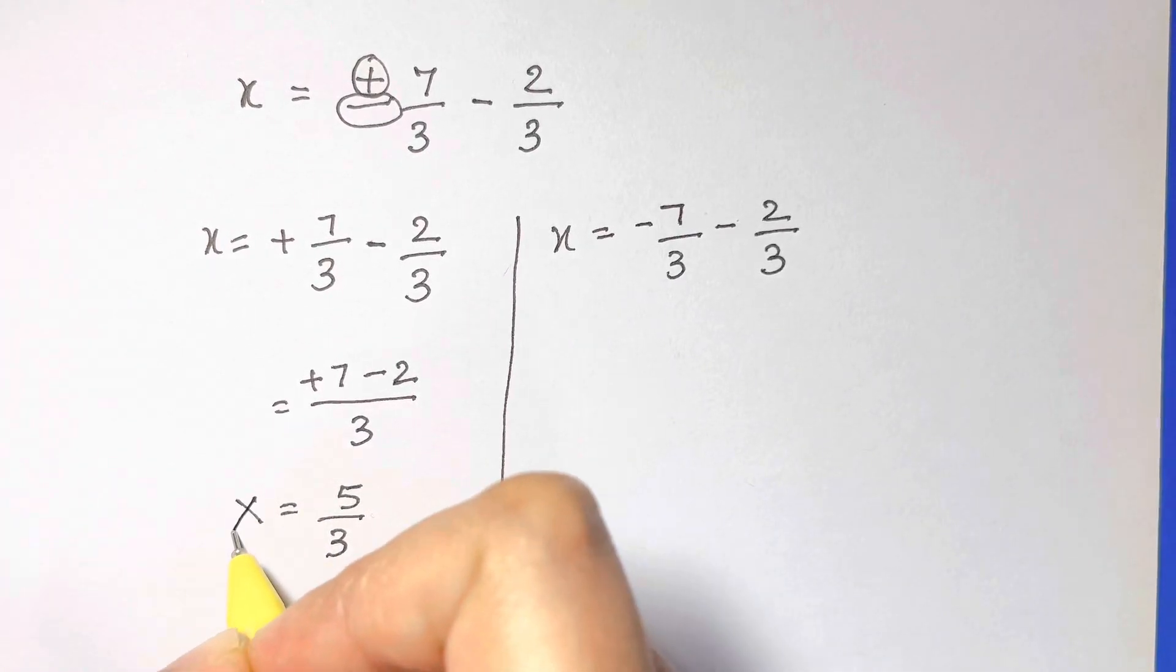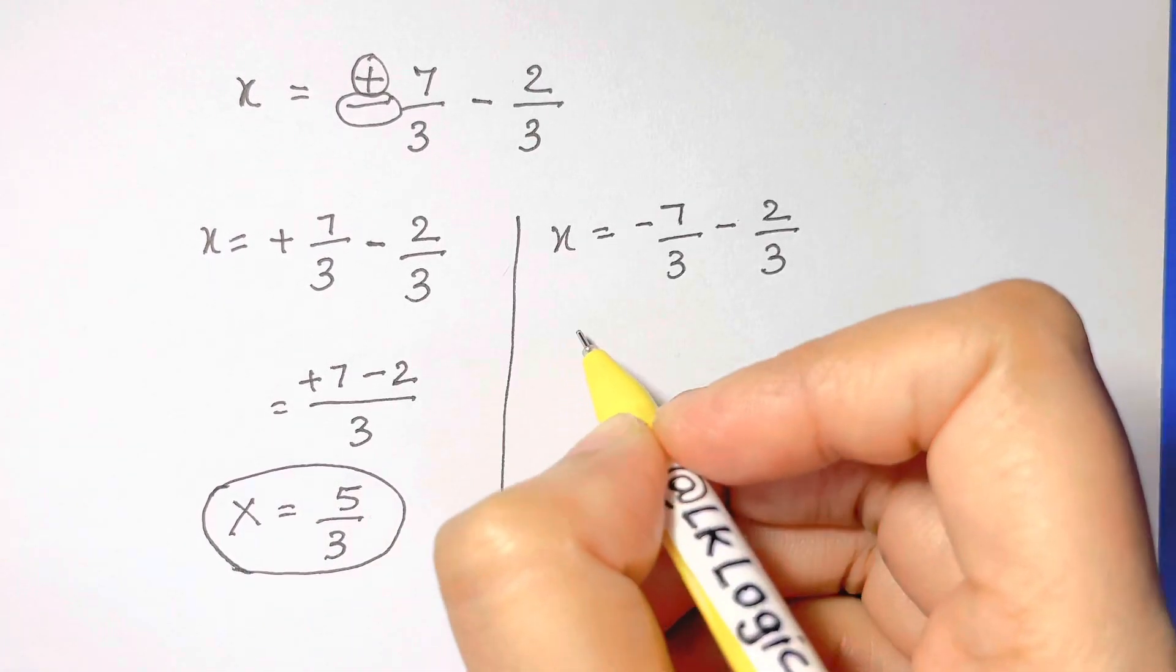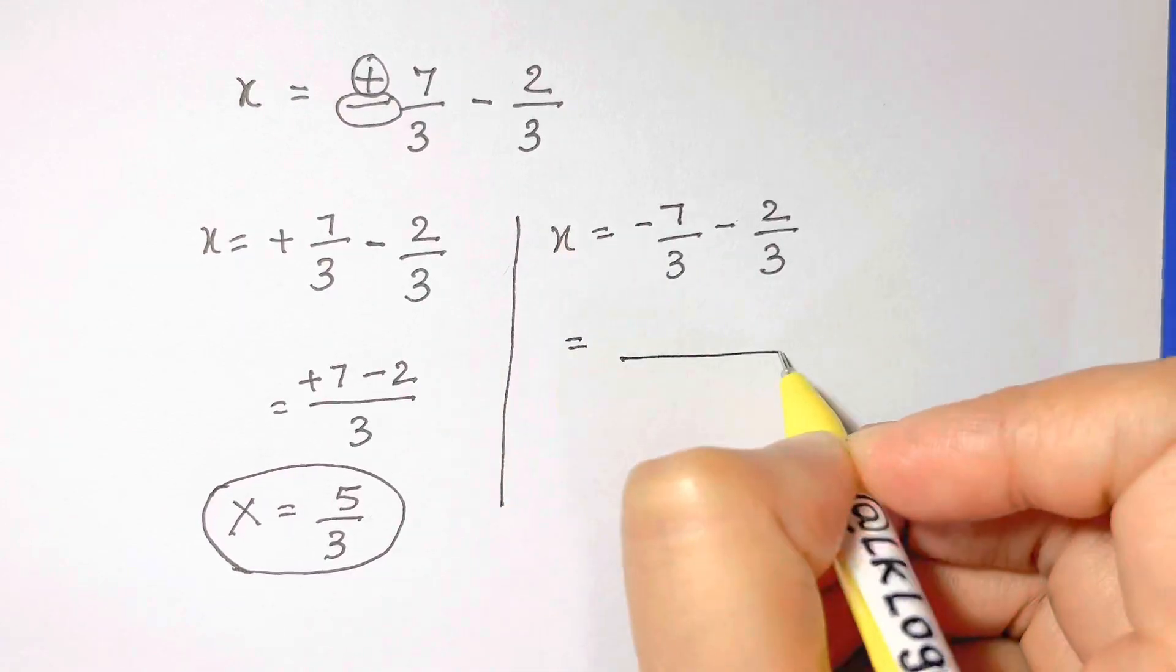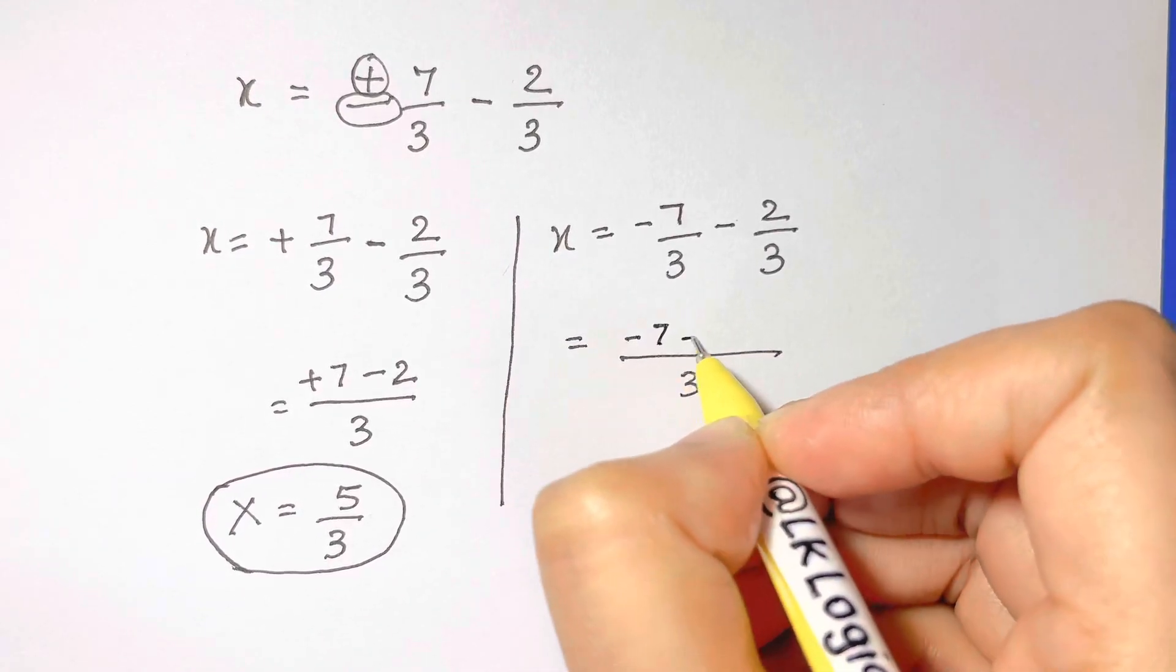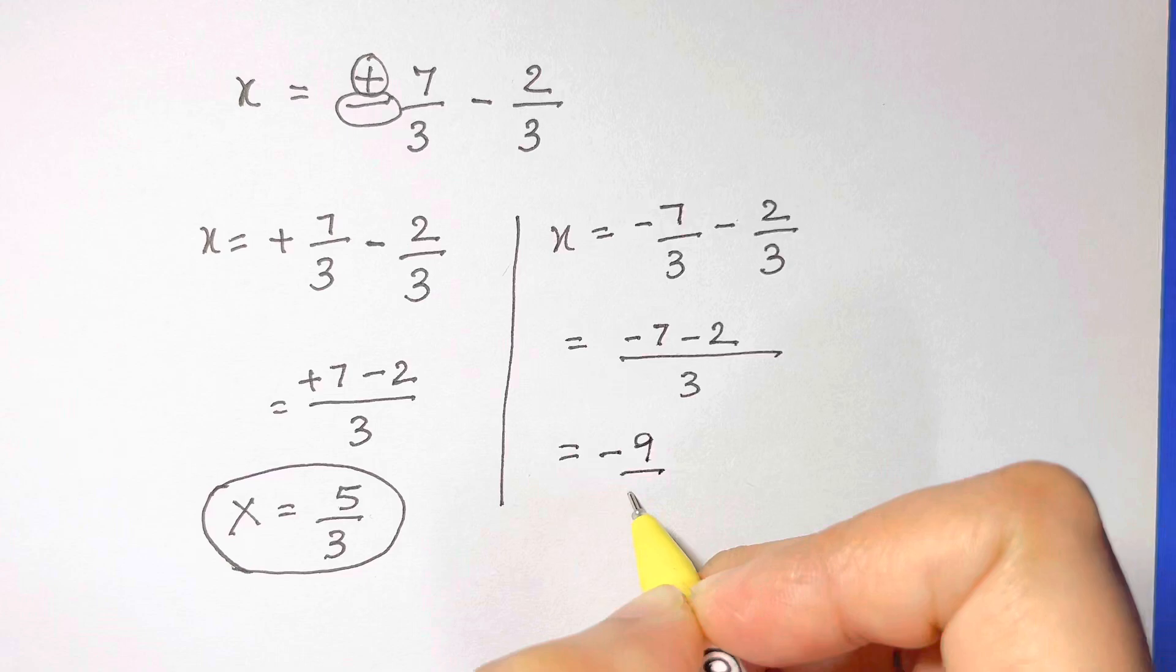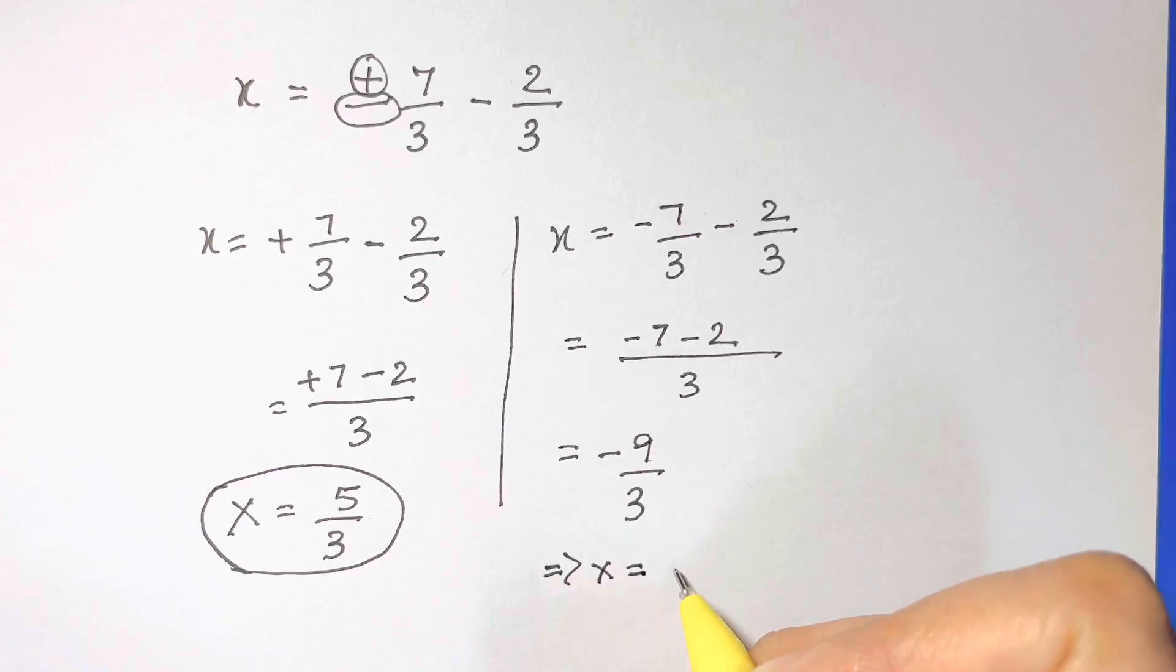So our first solution turns out to be x = 5/3, and the next one is -7/3 - 2/3. So x = -9/3 and x = -3, and that's the second solution.